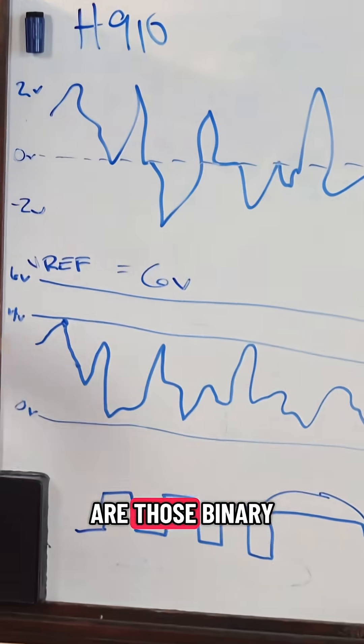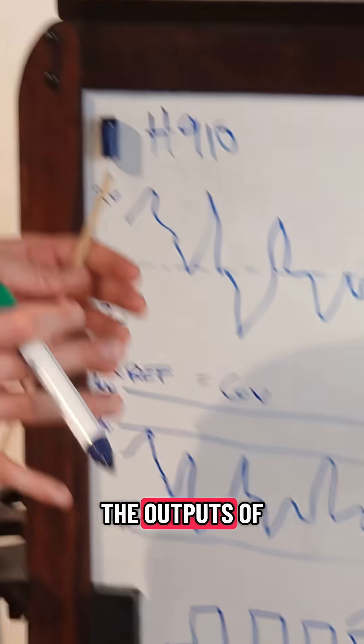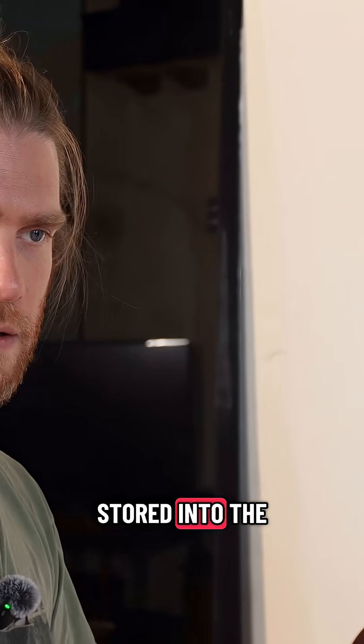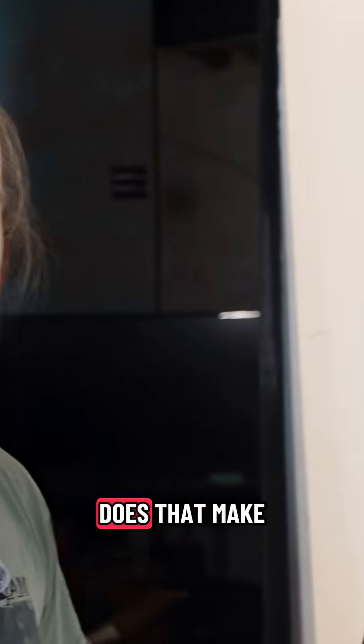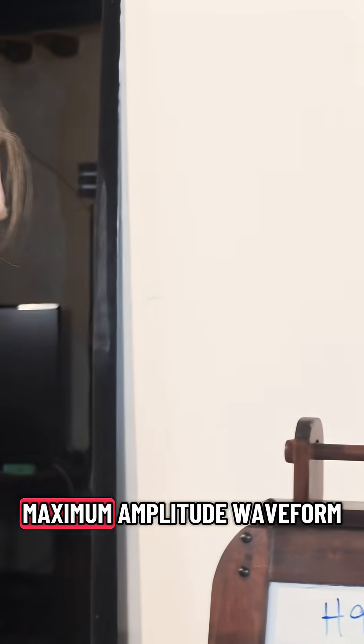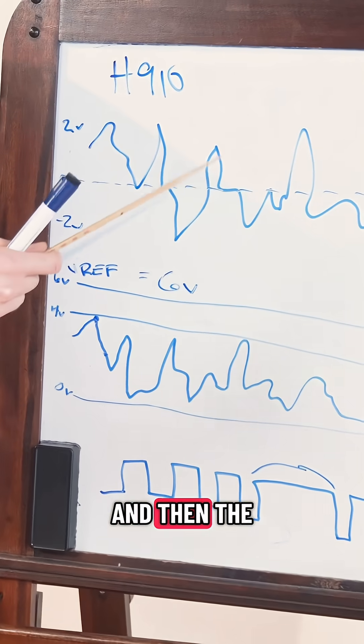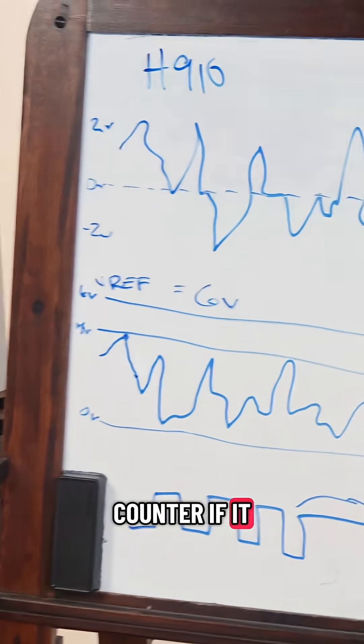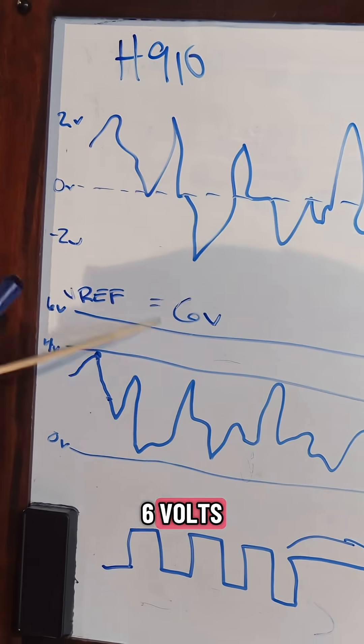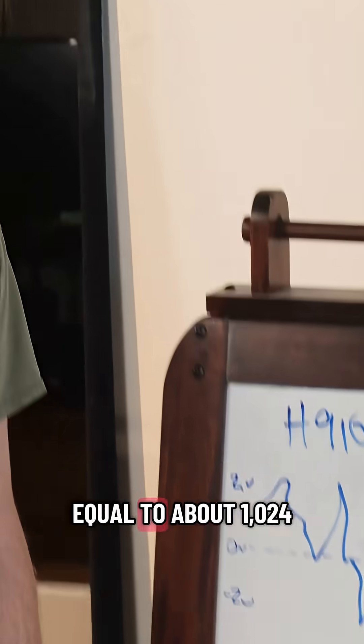So those numbers, those binary numbers that are the outputs of the counters, are stored into the RAMs sequentially. Does that make sense? So Eventide decided the maximum amplitude waveform will be represented by 6 volts. And then the counter, if it can count all the way to 6 volts, then the number is going to be equal to about 1024.